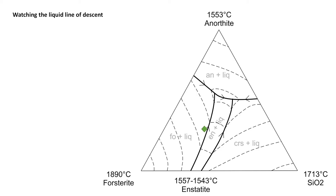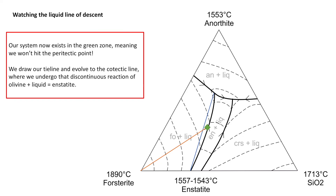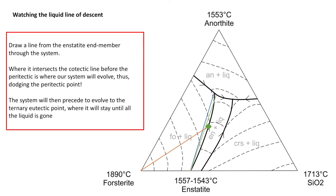Let's take a look at what would happen if our system starts in that green field. We draw the lines to show it's sitting in that green field, and just as before, we draw a line between the end member and the current system. Our system will evolve towards the cotectic between forsterite and enstatite. I'm going to draw a line between enstatite and the initial system. Our initial system sat at the intersection between the orange and green lines, and now we have an intersection between the forsterite–enstatite cotectic and that green line we've just drawn.